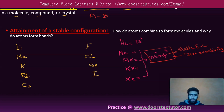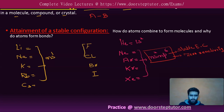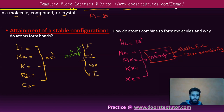If we look at the general electronic configuration for alkali metals, they possess the general electronic configuration of ns¹. Similarly, if we look at halogens, they possess the general electronic configuration of ns² and np⁵. These elements react because they try to achieve the same type of stable electronic configuration possessed by the noble gases.